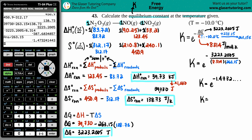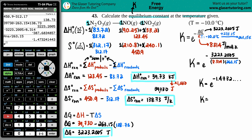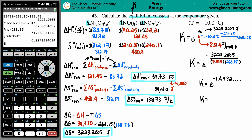Using the e button (second LN on TI-84), raise e to that exponent. Applying four significant figures — based on the lowest sig figs in the final calculation — K equals 0.2292. There are no units for the equilibrium constant. That is the final answer.